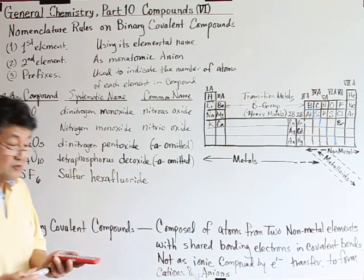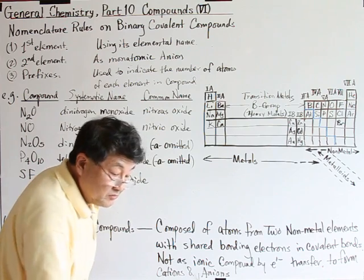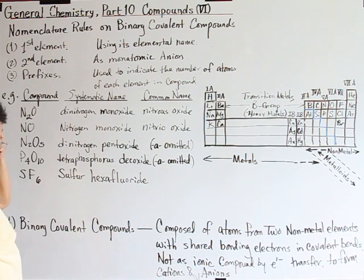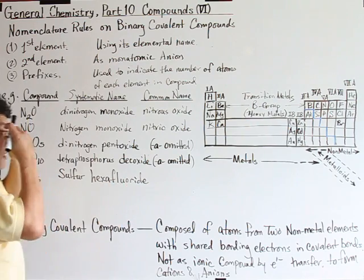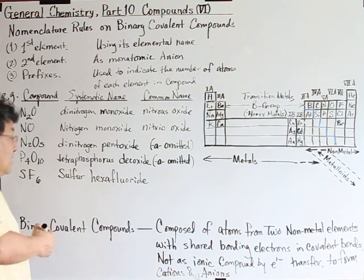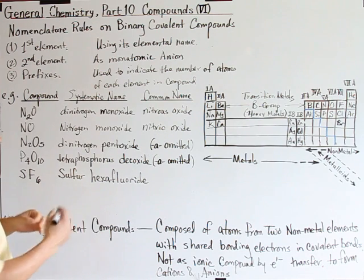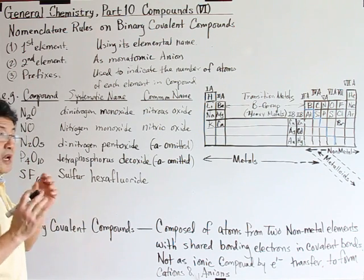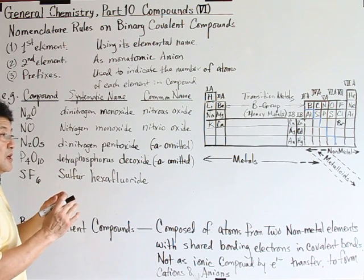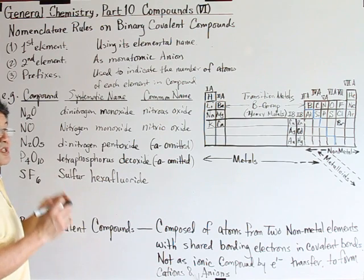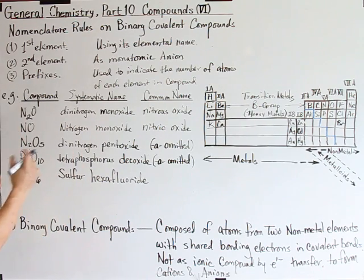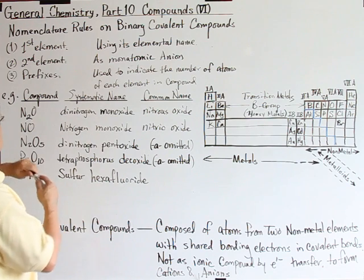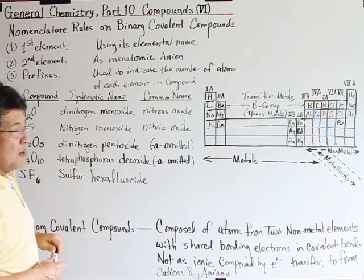So what's the rule of thumb of naming those compounds? There are three rules. Since most of them are non-metals, they don't form ions by sharing the bonding electron in between the two nuclei. It's binary and they form bonds sharing the electron. Because they come from two different elements, they are not identical elements, so they have slightly a little bit of polarity when they form compounds.